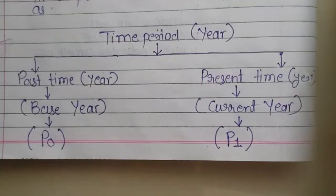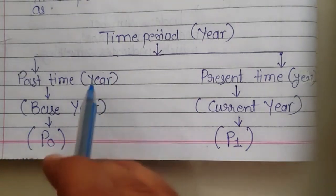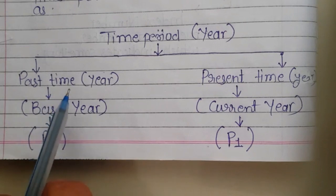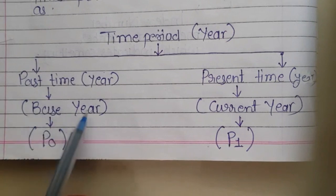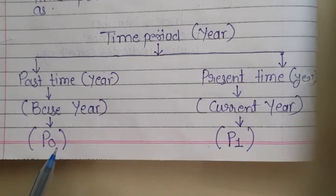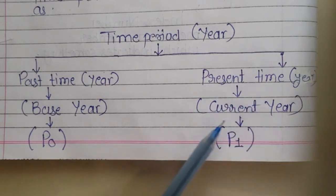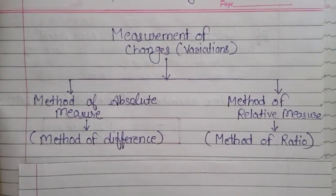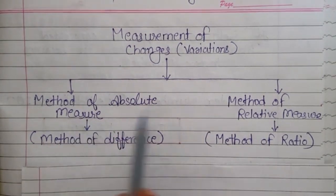For comparison, we need two time periods: past time or past year, and present time or present year. The past time or past year is also known as base year. Base year's price is indicated by P0 — whenever we see P0, we think it means price of base year. And present time is called current year; the price of current year is called P1. To find out the changes or variations in those variables, we have two different methods: first, method of absolute measure, and second, method of relative measure.